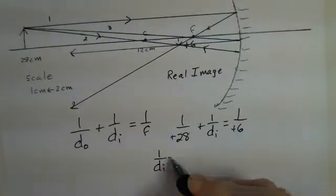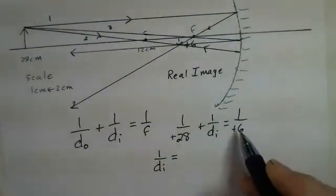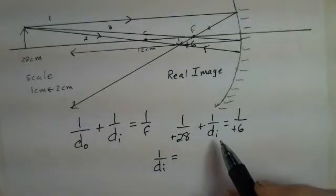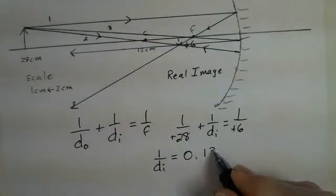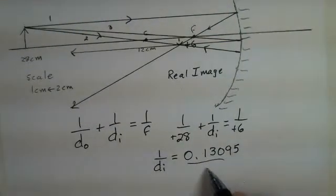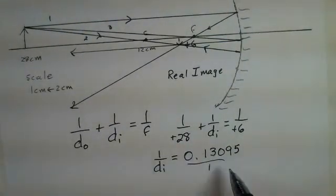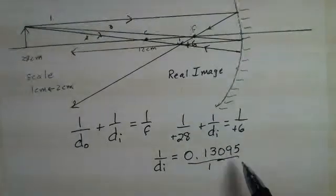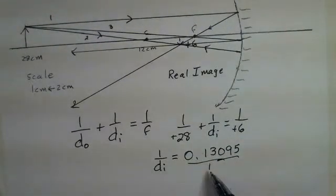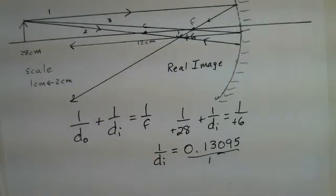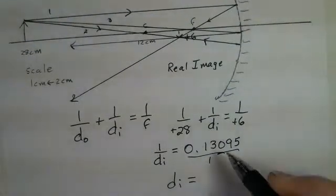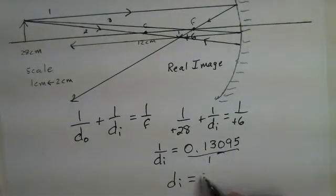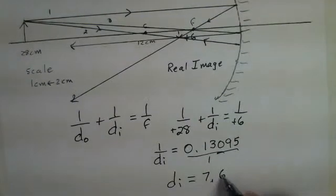So for the 1 over DI, it's going to be 1 over 6 minus 1 over 28. When I put that into my calculator, I have result 0.13095. And then to find DI, I have to invert both sides. Just for reminder, putting this number divide by 1, you can always divide something by 1 and not disturb the result. So inverting both of these, DI over 1 equals 1 divided by 0.13095. And I achieve 7.64 centimeters.